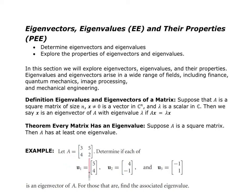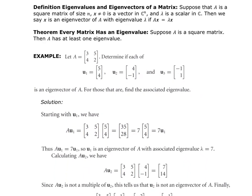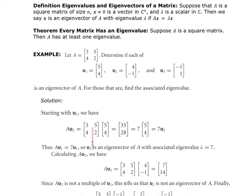Here is my first example. I have a 2 by 2 square matrix and I'm trying to decide whether U1, U2, and U3 are eigenvectors for A, and if they are, to find the associated eigenvalue. I multiply matrix A by my first vector and get 35 and 28. Factoring out a 7 gives 5 and 4 — back to where I started. So lambda for U1 is 7, my scalar multiplier.